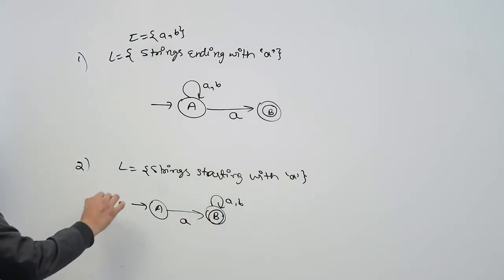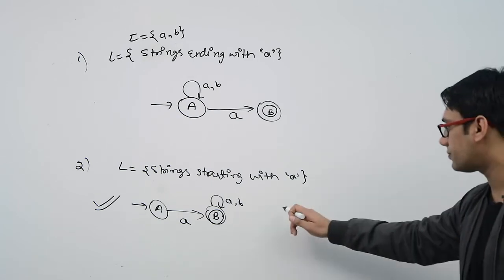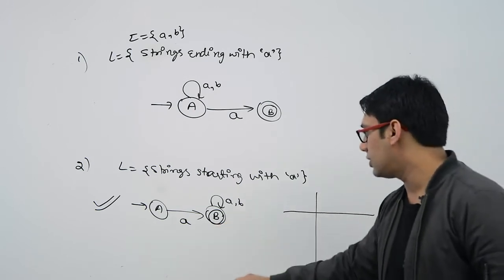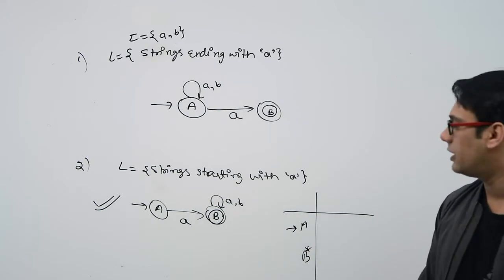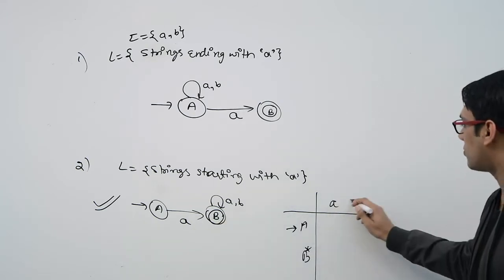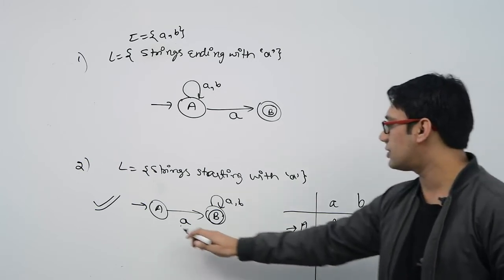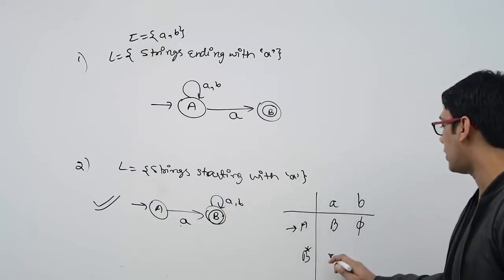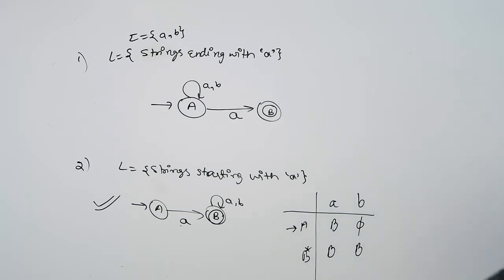First, let us convert the second NFA to an equivalent DFA, and then we will convert the first one. First, make a transition table. We have states A and B — A is the initial state and B is the final state — and two input symbols, small 'a' and small 'b'. In state A, if you see symbol 'a' you go to state B. In state A, if you see symbol 'b' you go to Phi. In state B, if you see 'a' you go to B. In state B, if you see 'b' you go to B itself.